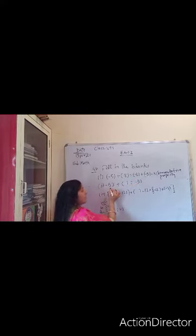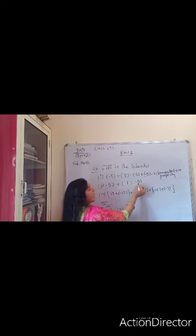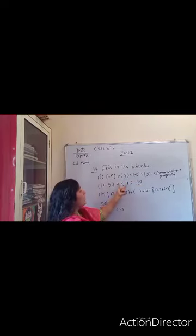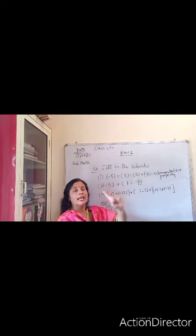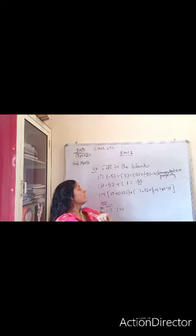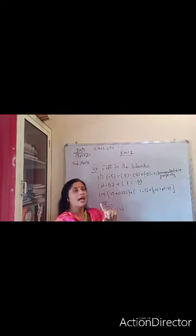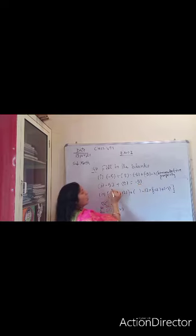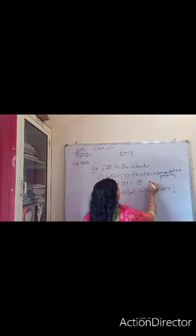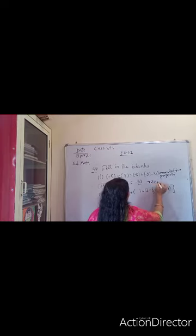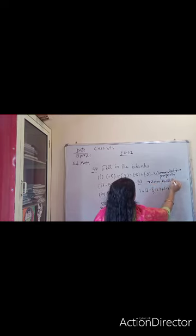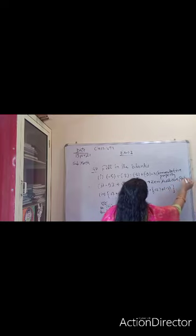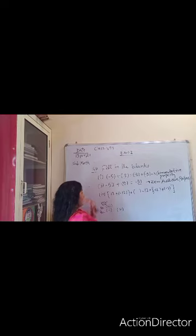Next: minus 53 plus blank equals minus 53. Which number will you add to this number so that the answer remains the same? There is only one number in our number system that does not affect addition or subtraction of any number. If we add 0 here, there is no change in the answer — the answer will remain that one number always. So this is called the zero additive property. I am leaving the third part for you — you will do it yourself.